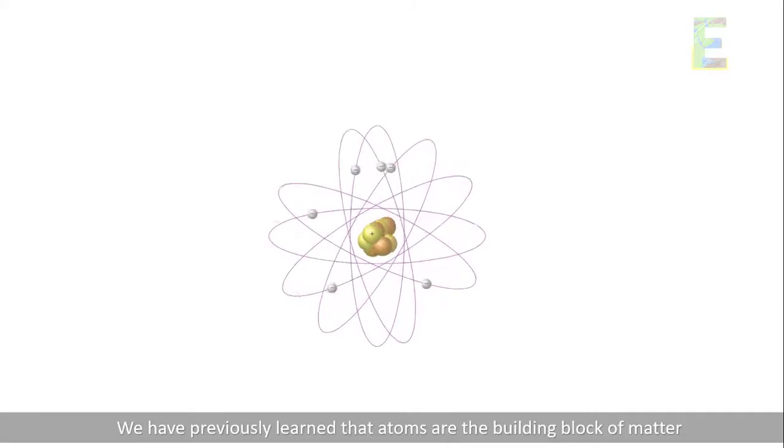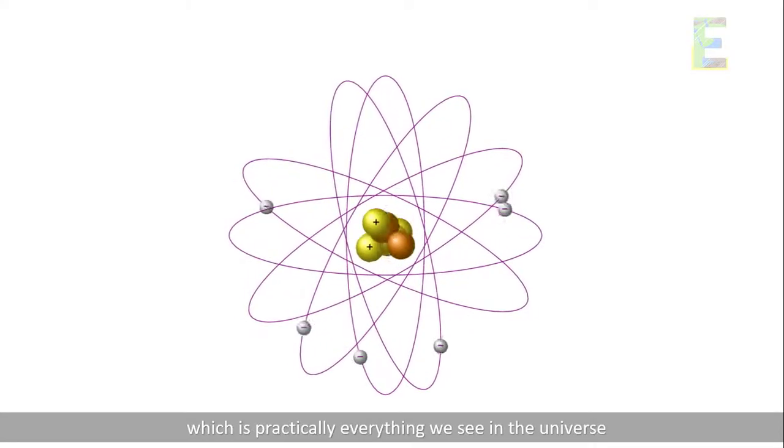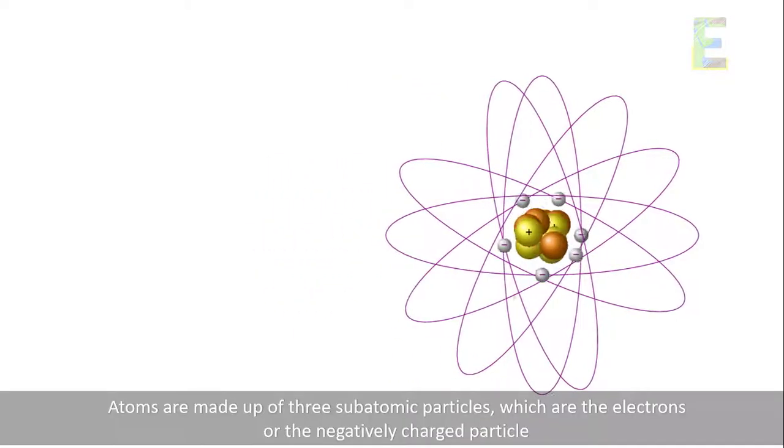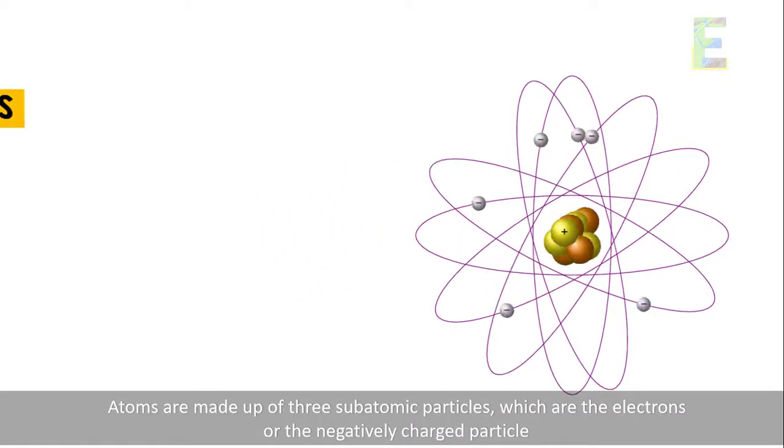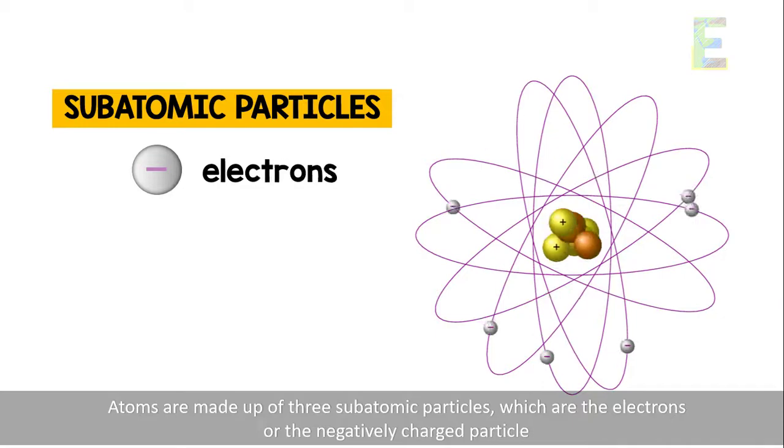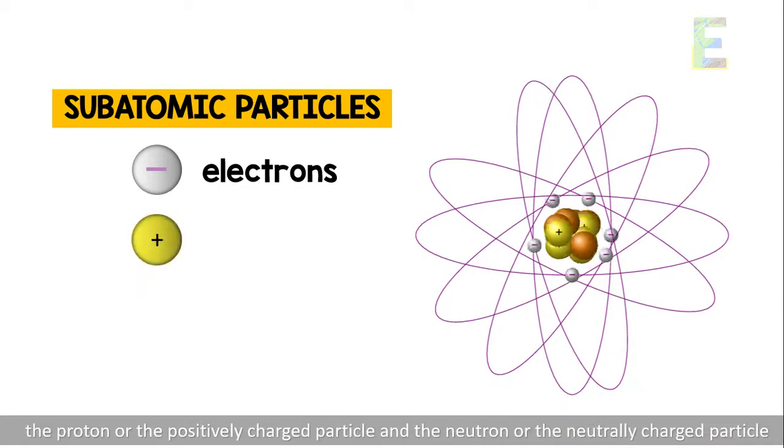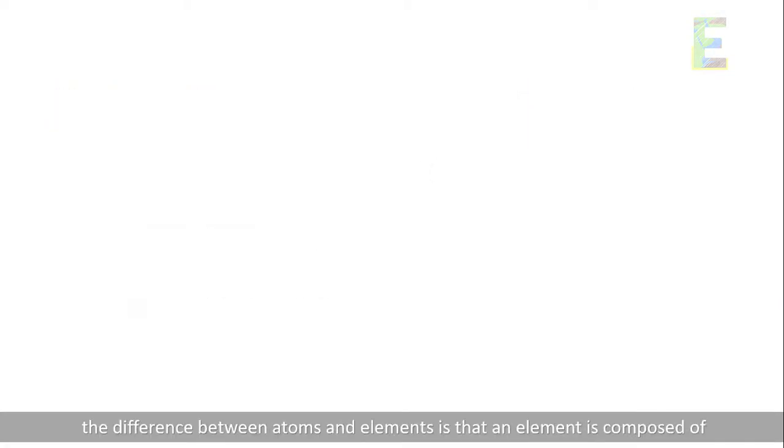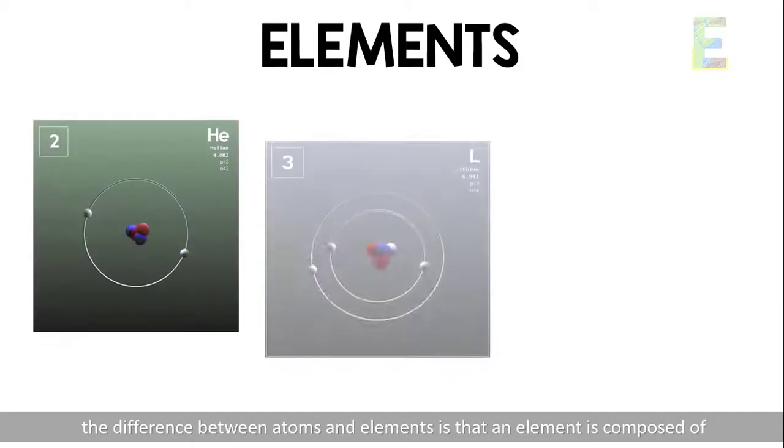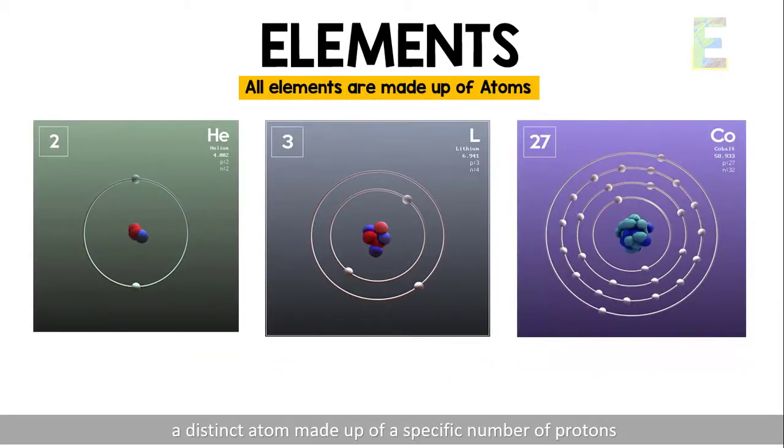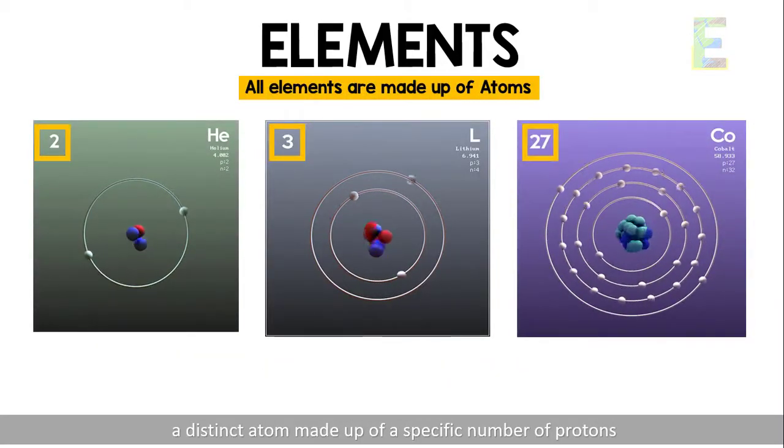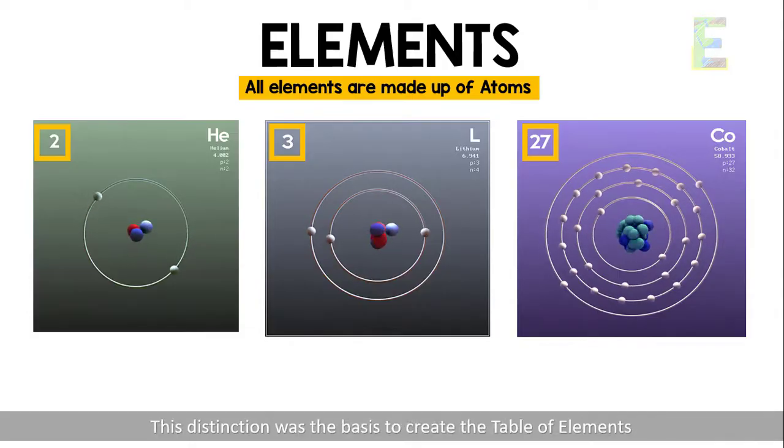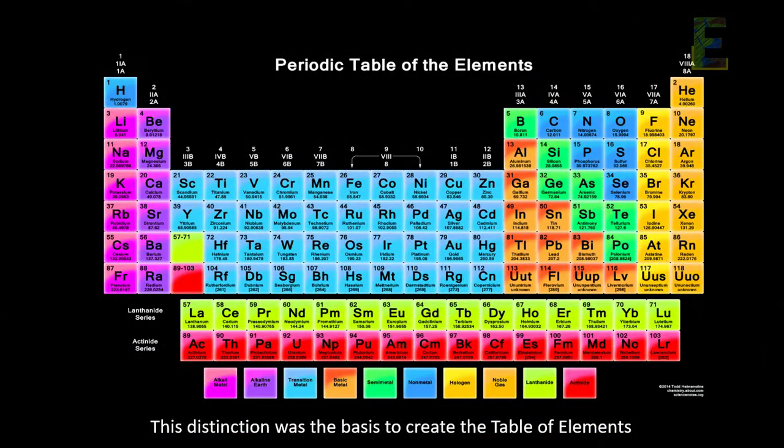We have previously learned that atoms are the building block of matter which is practically everything we see in the universe. Atoms are made up of three subatomic particles which are the electrons or the negatively charged particle, the proton or the positively charged particle, and the neutron or the neutrally charged particle. Did you know that the difference between atoms and elements is that element is composed of a distinct atom made up of a specific number of protons? This distinction was the basis to create the table of elements.